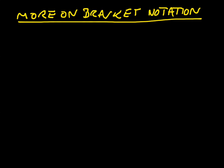I'm going to talk a little bit more about bracket notation. We've been writing up to this point that the action of an operator, A, on a state, a ket, psi, can be written as another state, another ket, chi. That's a mathematical equation which says that the action of an operator on a state gives another state.